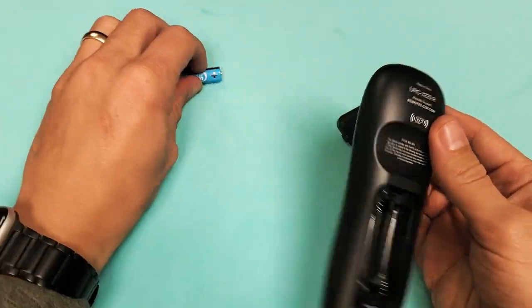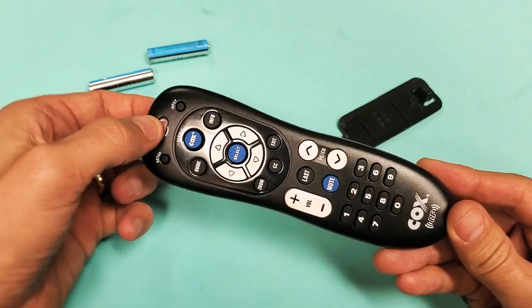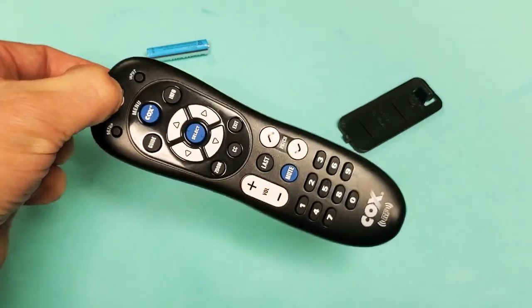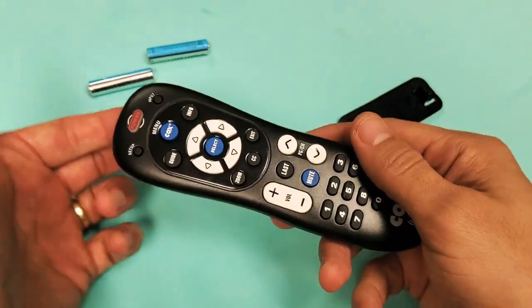As soon as the batteries are out, look at your power button here and press and hold it. Press and hold it for 30 seconds. Do not let go. I'm still holding on to the power button. After 30 seconds is up, go ahead and let go.